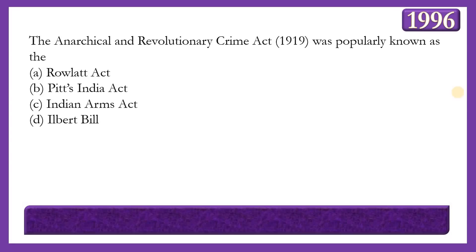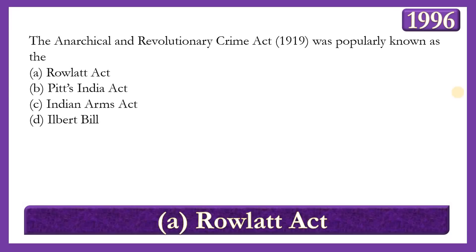Next question: The Anarchical and Revolutionary Crimes Act, 1919, was popularly known as? Options: Rowlatt Act, Pitt's India Act, Indian Arms Act, or Ilbert Bill. The answer is option A — the Rowlatt Act — as this act was passed by a committee under the chairmanship of Justice Sidney Rowlatt. Gandhiji considered it a black act because it allowed the government to try political cases without juries.